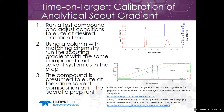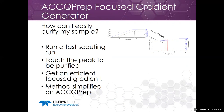We've created something called Time on Target, which allows calibration of an analytical scout gradient to a preparative system. We run a test compound and elute under conditions so the compound elutes at the desired retention time. The analytical column is used with matching chemistry; you run the scouting gradient with the same compound and solvent system as the prep run. We've applied this to a focus gradient generator on the AcuPrep — you can run a very fast scouting run, touch the peak to be purified, get an efficient focus gradient, and we've simplified it so you don't have to do any of the calibrations.